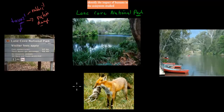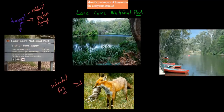You also have introduced species. For example, the fox is a problem in Lane Cove National Park. This introduced species was brought in by humans, and it's actually killing all the native wildlife. And then you have things like the water itself being used by humans, which could lead to more rubbish or different types of impact on the environment.